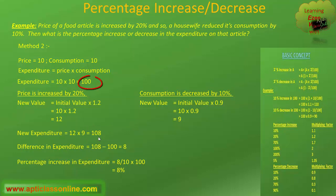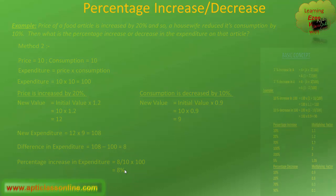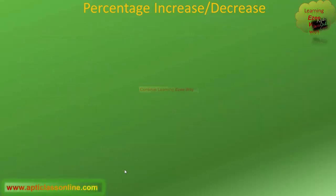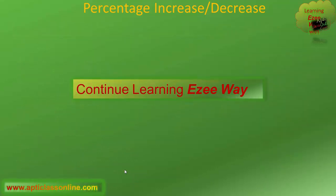By looking at the initial value of 100 and the final value of 108, one can see there is an 8 percent increase in expenditure. Both methods give the same answer: 8 percent increase in expenditure. We can apply either method to calculate the result. We will discuss more questions based on product constancy in the next class.